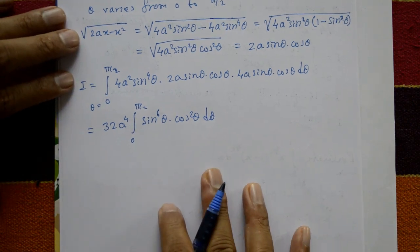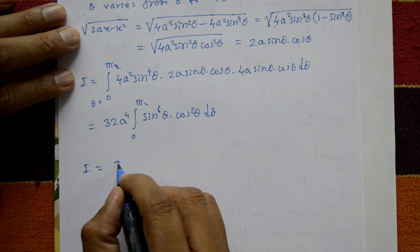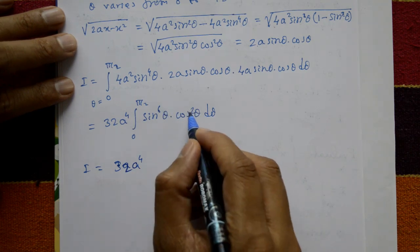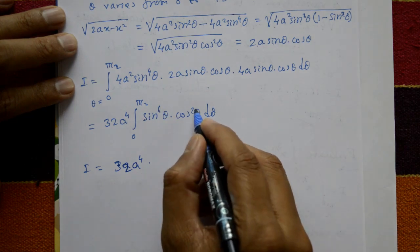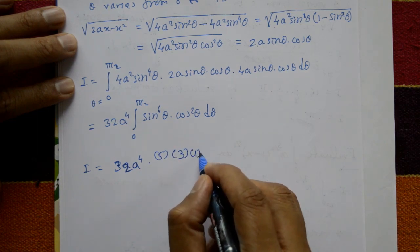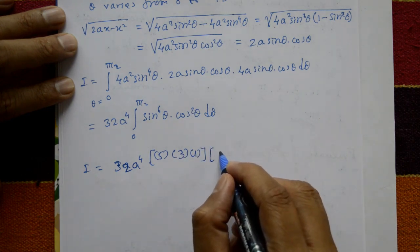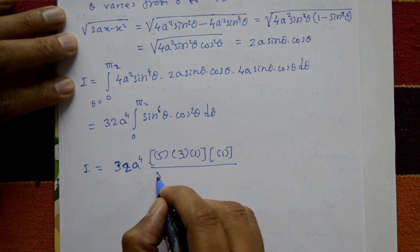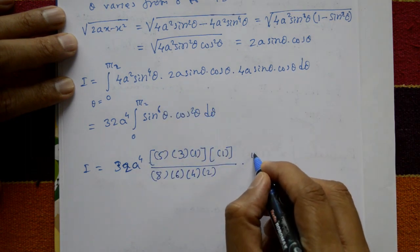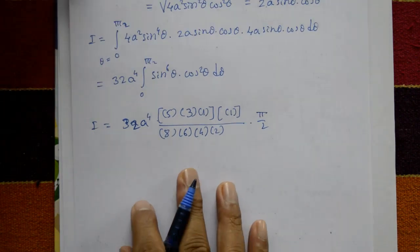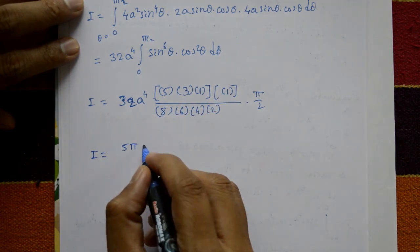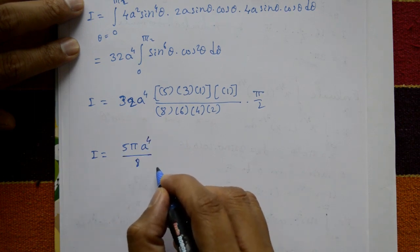Inside, using the reduction formula — both are even. For sinⁿ: n, n-1, ..., 5, 3, 1; and for cosⁿ: n, n-1, ..., similarly. Divided by (m+n)(m+n-2)...6·4·2, and since both are even, multiply by π/2. Canceling the numbers, we finally get I = 5π·A⁴ / 8. This is the required answer.